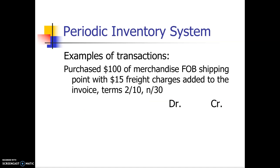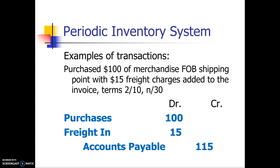Let's say we purchased $100 of merchandise, terms are FOB shipping point, which means the buyer has to pay the shipping charges, and the shipping charges of $15 were added to the invoice. We're not going to debit merchandise inventory for the freight charges or for the merchandise we purchased because we don't touch merchandise inventory during the period. We will debit purchases $100, debit freight in for $15, and credit accounts payable for $115.